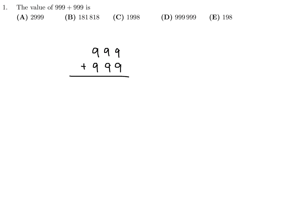9 plus 9 is 18, carry the 1. Then we have 1, 9, and 9, so that's 19, carry the 1. And then again we have 1, 9, and 9, which is 19. And there you go, 1998. So number 1, the answer is C.